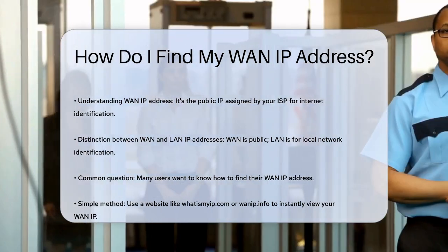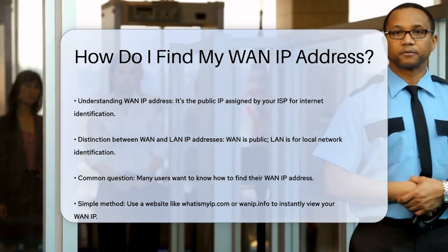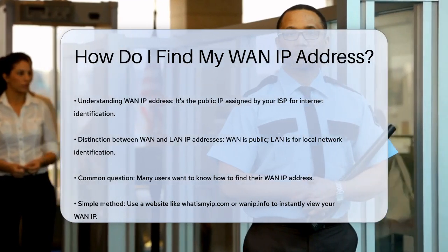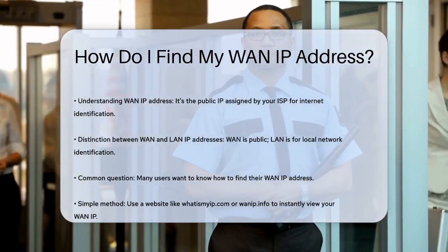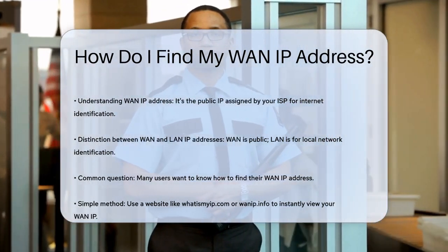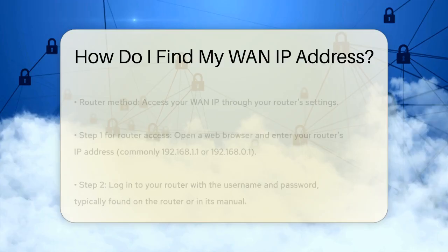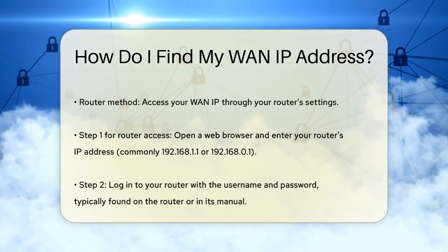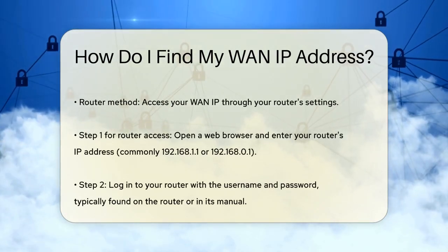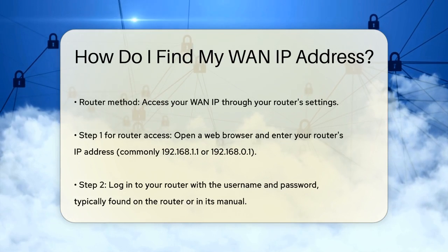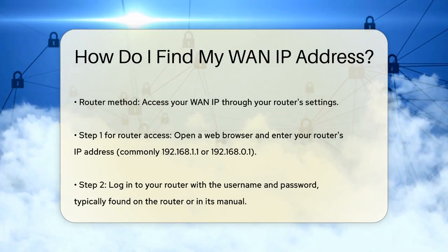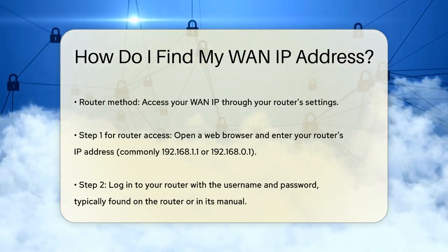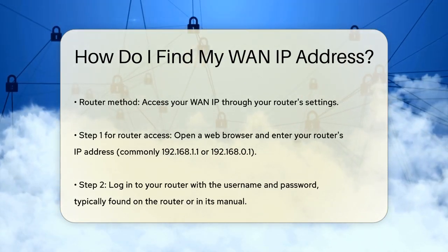To find your WAN IP address, you have a few easy methods. Here's one of the simplest ways: you can use a website that displays your public IP address. Sites like whatismyip.com or wanip.info can show you your WAN IP address instantly. Just open your web browser, go to one of these sites, and your WAN IP address will be displayed.